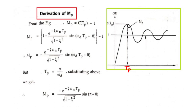Hello everyone, welcome to the control system playlist. In this video we derive the expression for peak overshoot. First we discuss what peak overshoot is — in the last video we derived the formula for peak time and rise time. At Tp, that is peak time, you get the first overshoot, which is the peak overshoot mp of the second order system.